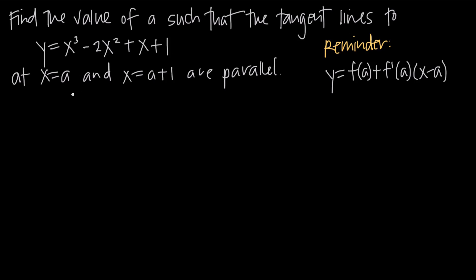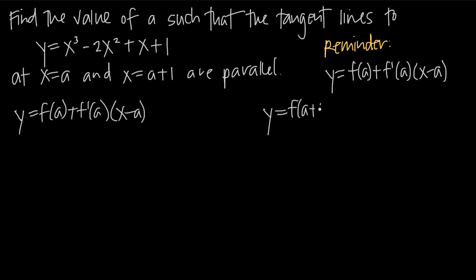In this particular problem, we've been told that x is equal to a and x is equal to a plus 1 for our separate tangent lines. For x equals a, we use the formula y equals f of a plus f prime of a times x minus a. For x equals a plus 1, we plug a plus 1 in everywhere for a, giving us y equals f of a plus 1 plus f prime of a plus 1 times x minus quantity a plus 1.